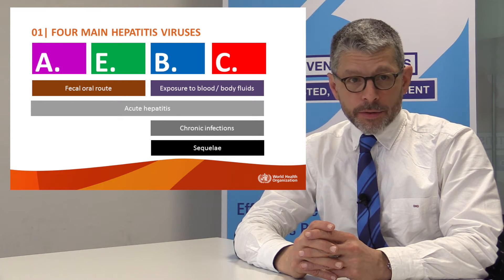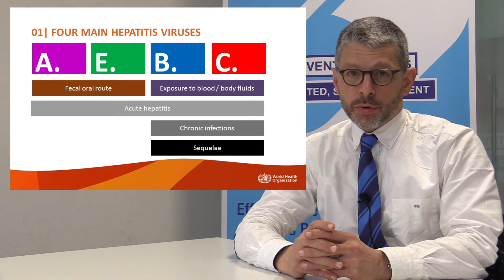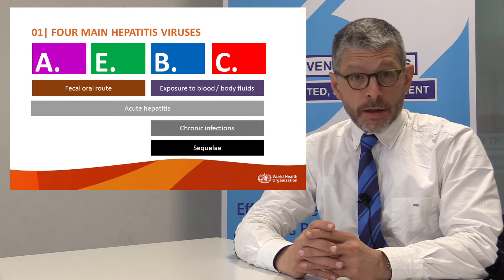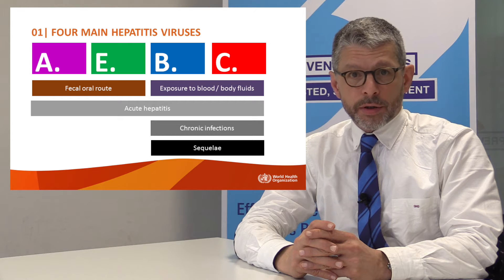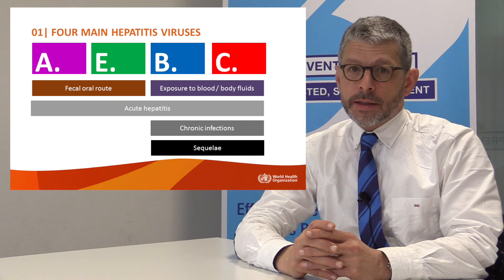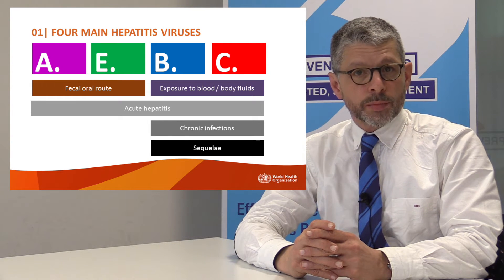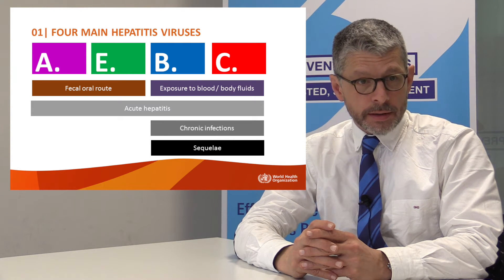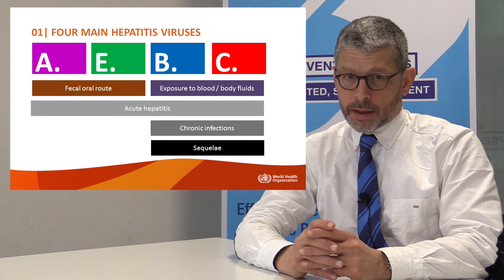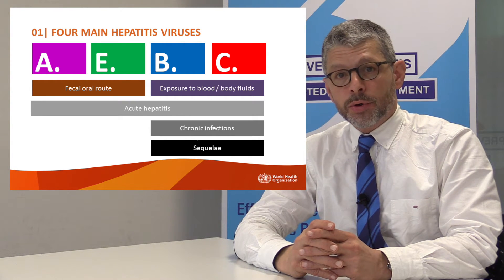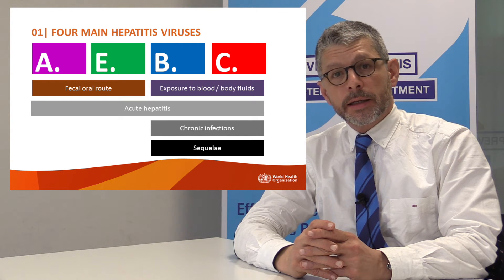Hepatitis A and E viruses are mostly transmitted through the fecal-oral route. They mostly cause acute hepatitis, which can occasionally be fatal, but in most cases is self-limiting. Hepatitis B and C viruses are mostly transmitted through exposure to blood and body fluids. They can also cause acute hepatitis, but the majority of the harm they cause comes from a silent chronic hepatitis, which after some time causes sequelae including hepatocellular carcinoma and cirrhosis.